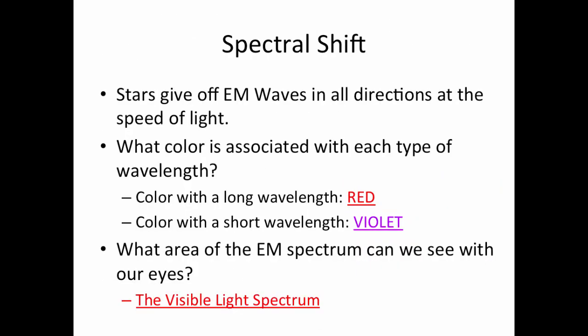The answer to how color can help us is spectral shift. All stars in the universe give off electromagnetic waves in all directions at the speed of light. Remember, the EM spectrum and every wave we've talked about from radio to gamma is all in a light wave.